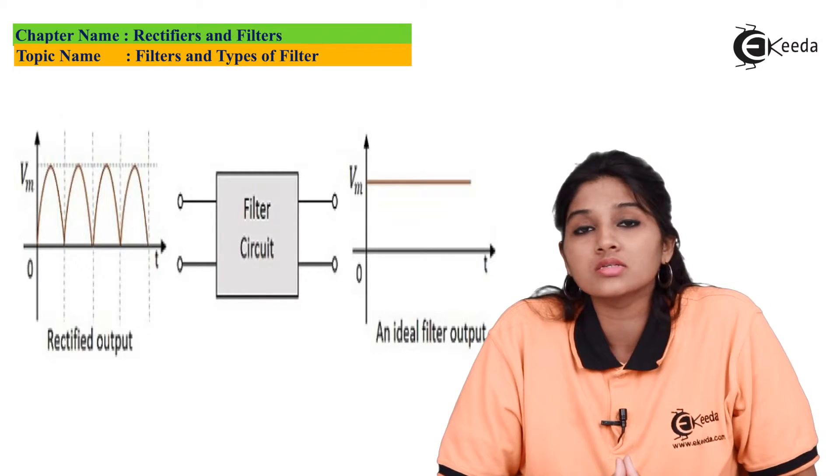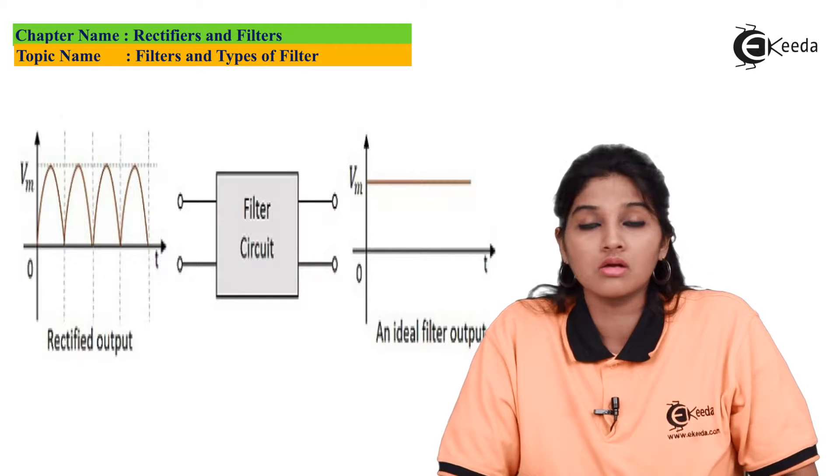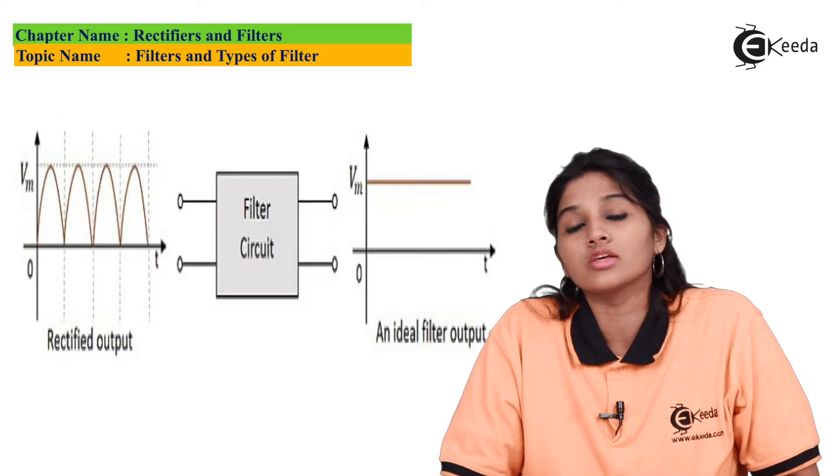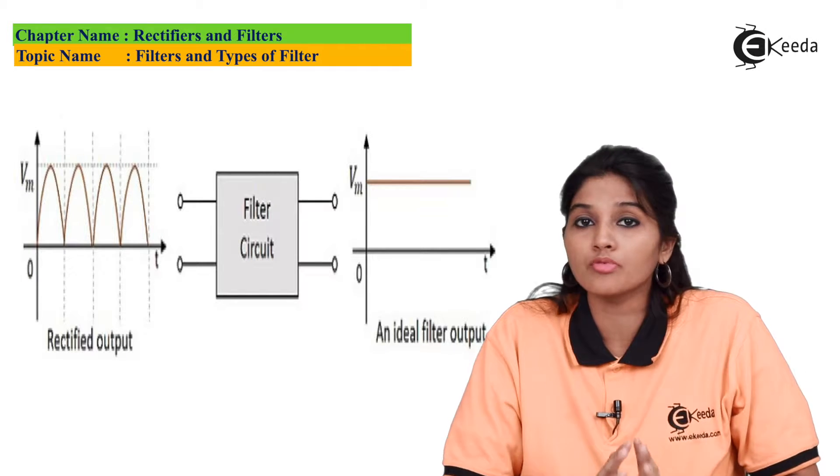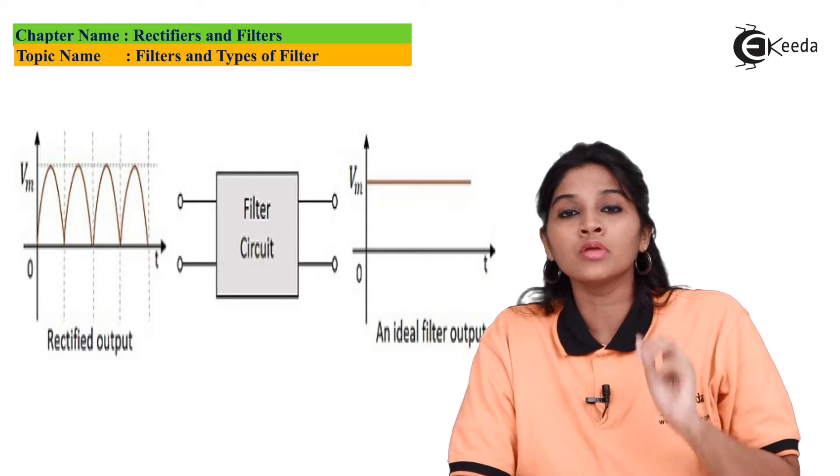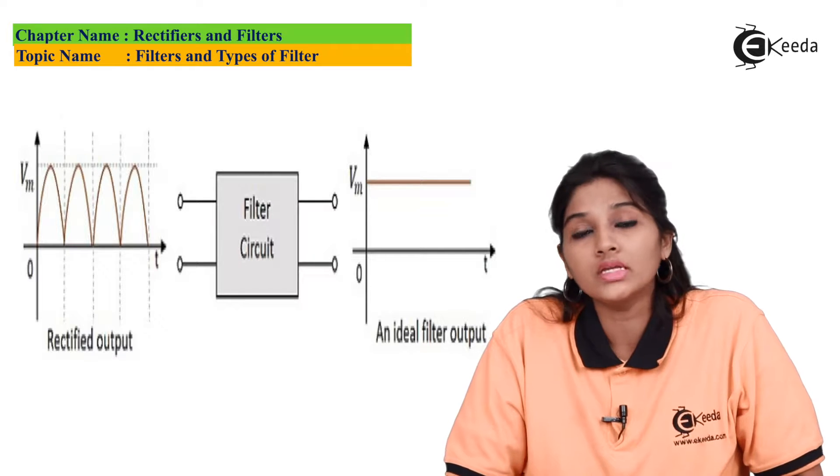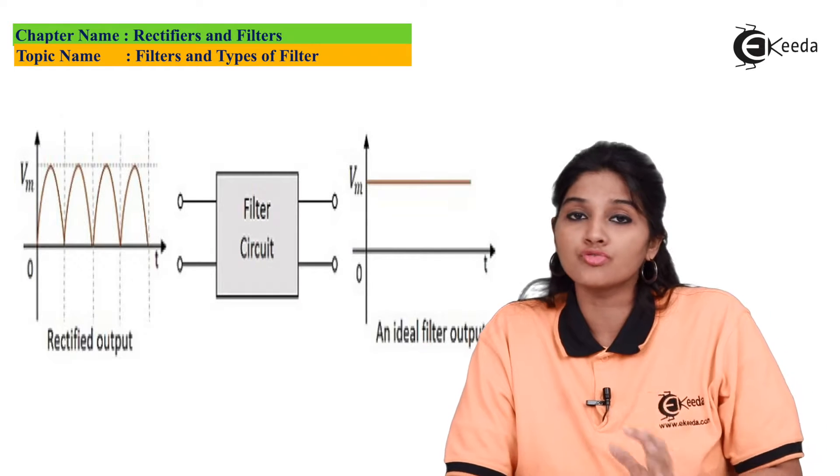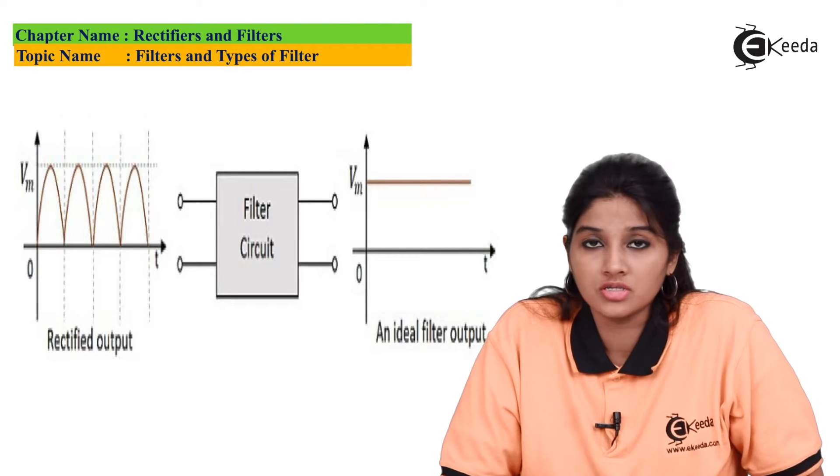We know that rectifier is a circuit that is used for converting AC signal into DC signal. But this DC signal is required for many electronic circuits. That DC signal is supposed to be a pure DC signal. That means it should contain minimum number of AC component or it must be a pure DC signal. Therefore, we need a circuit that can be used for removing of the AC component. So that circuit is nothing but filter circuit.